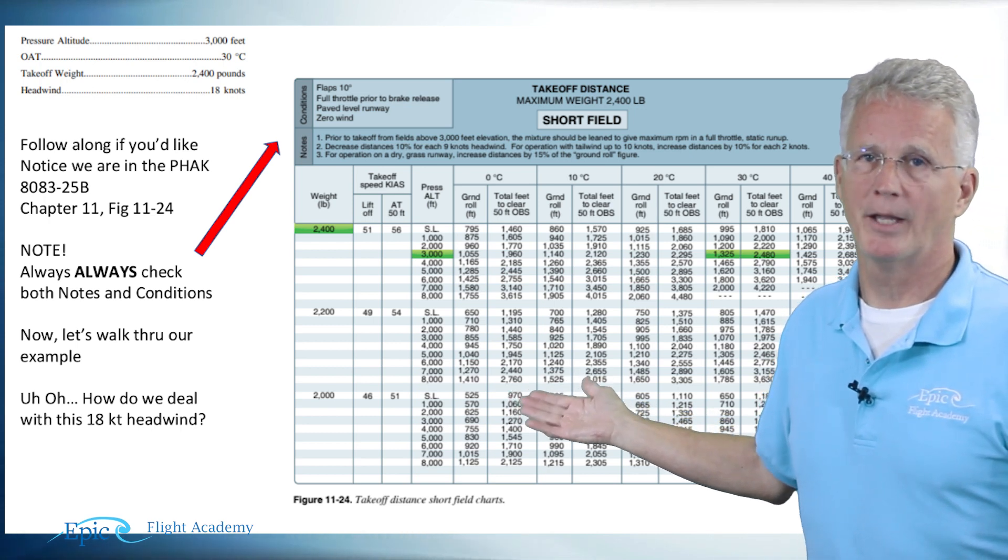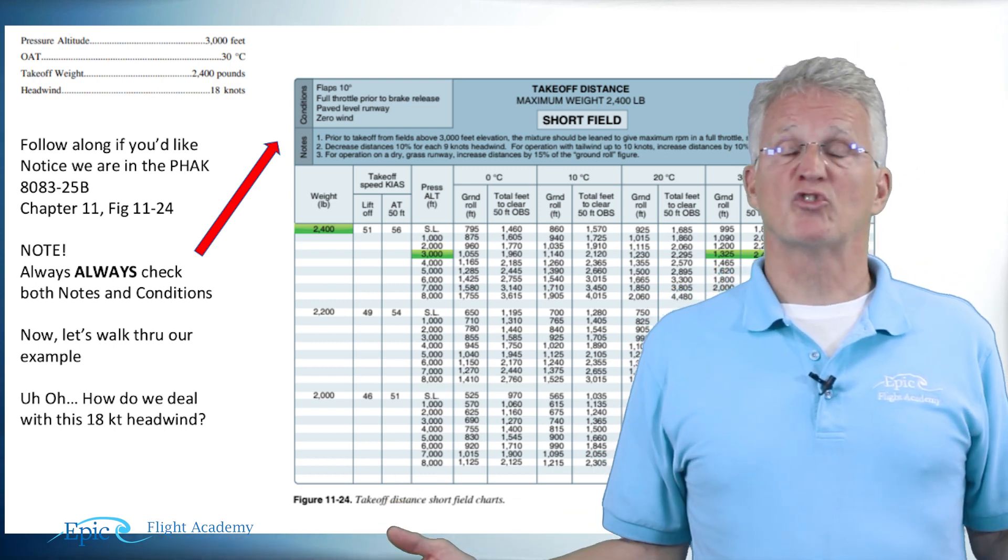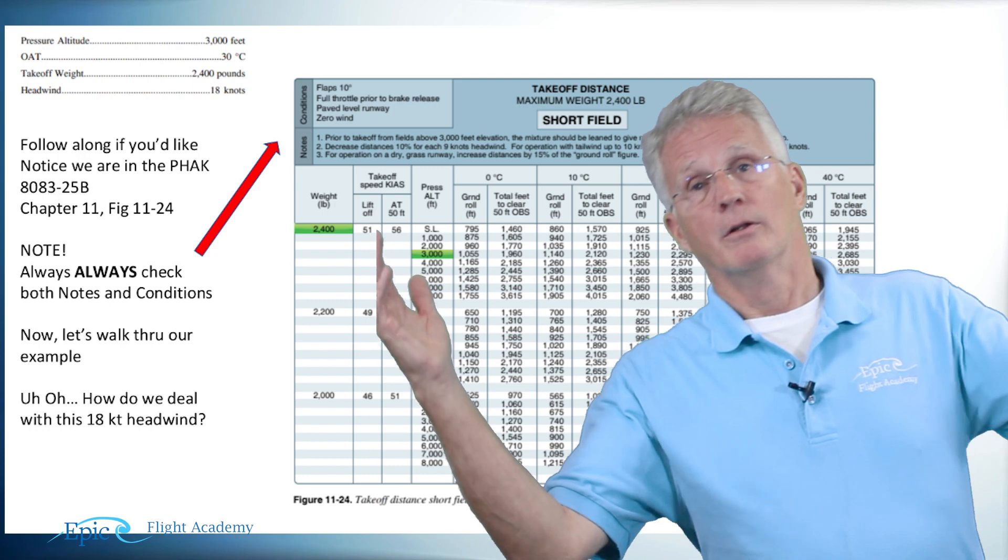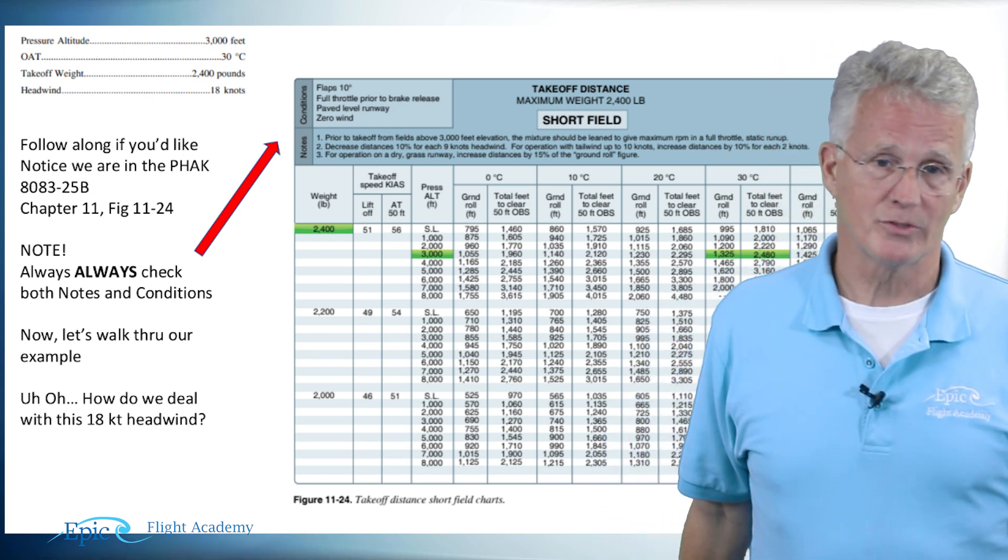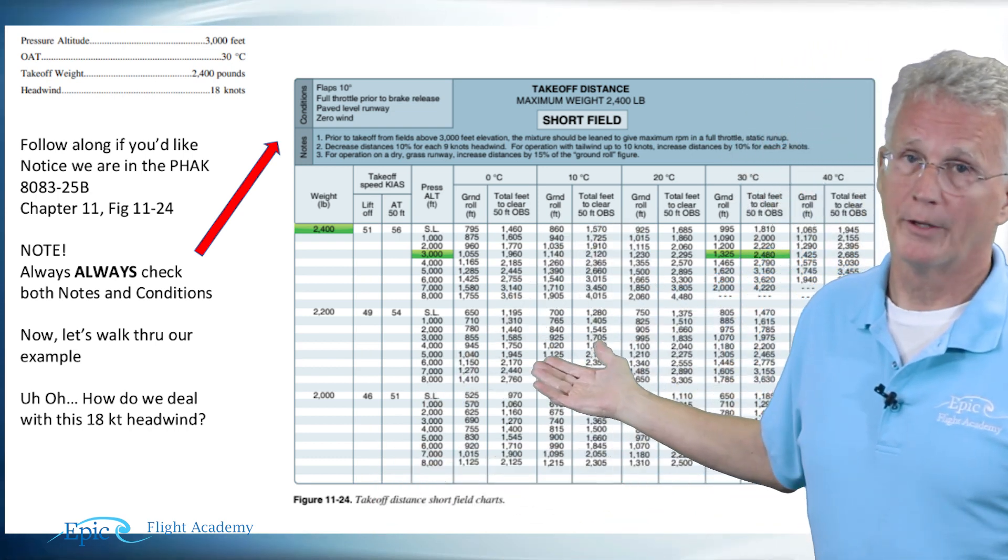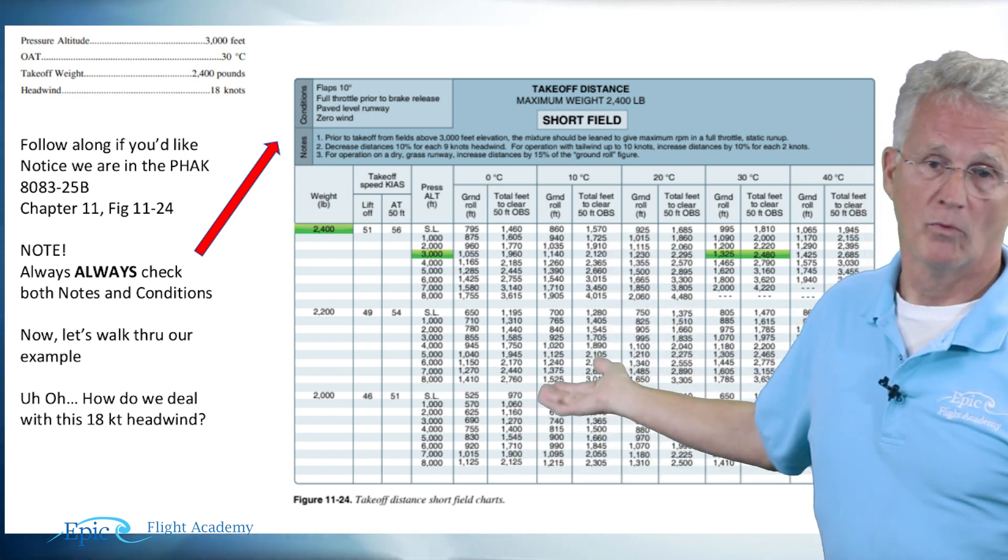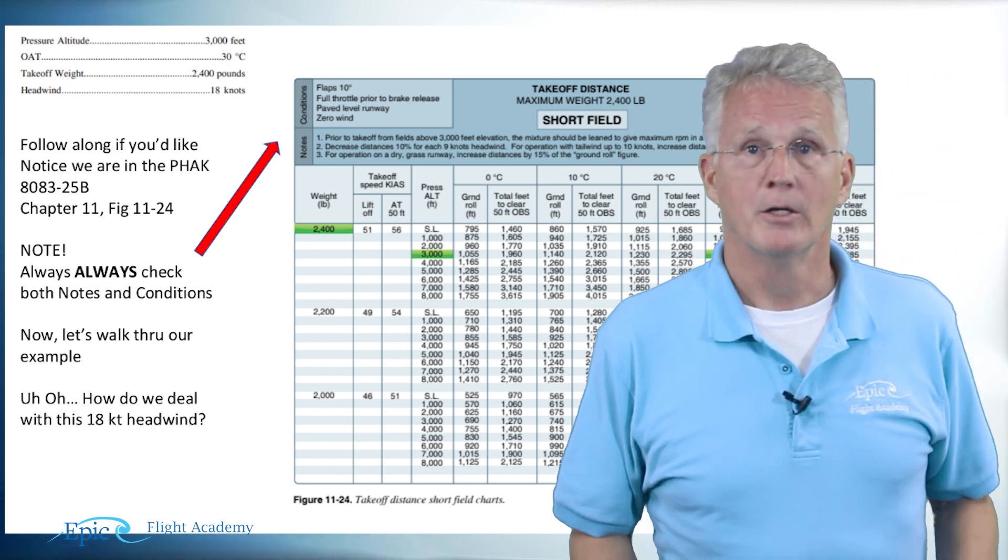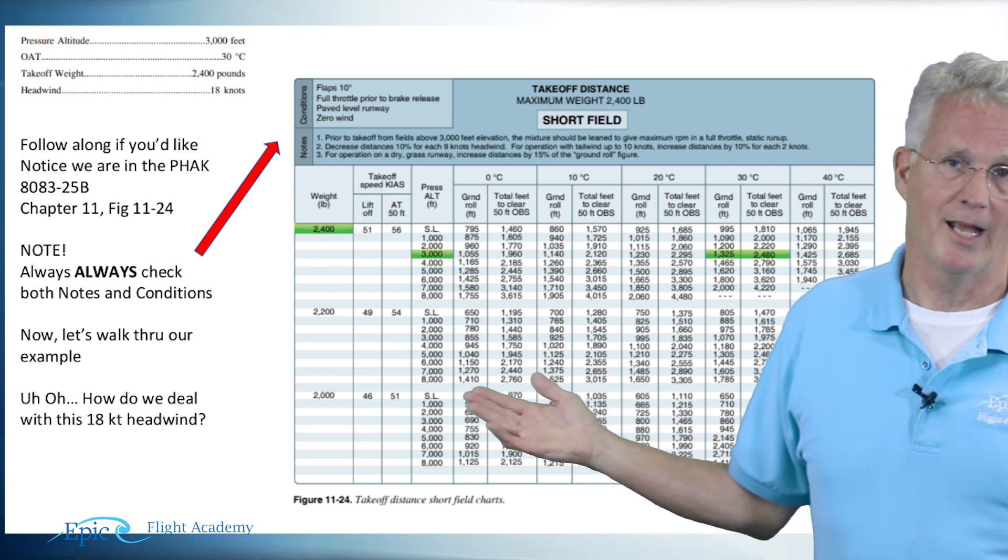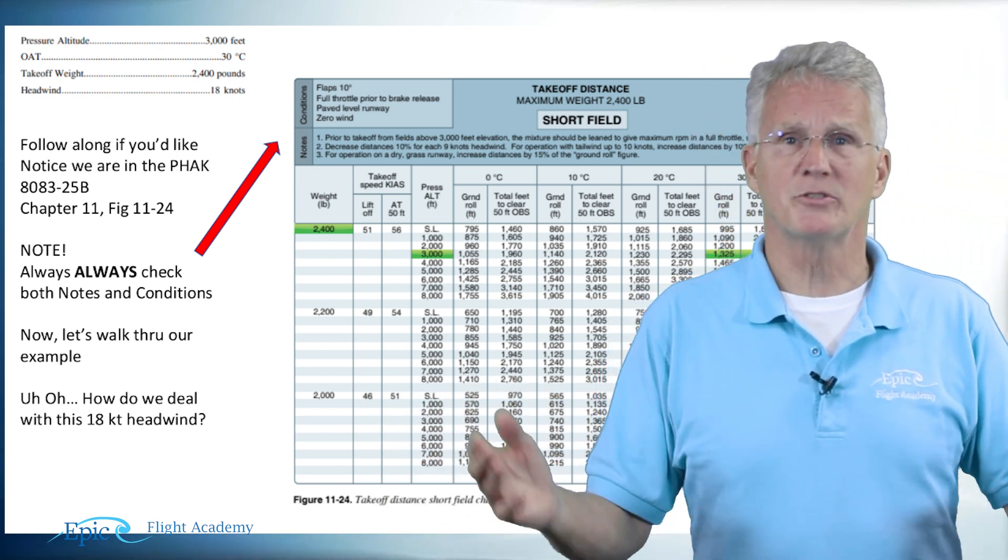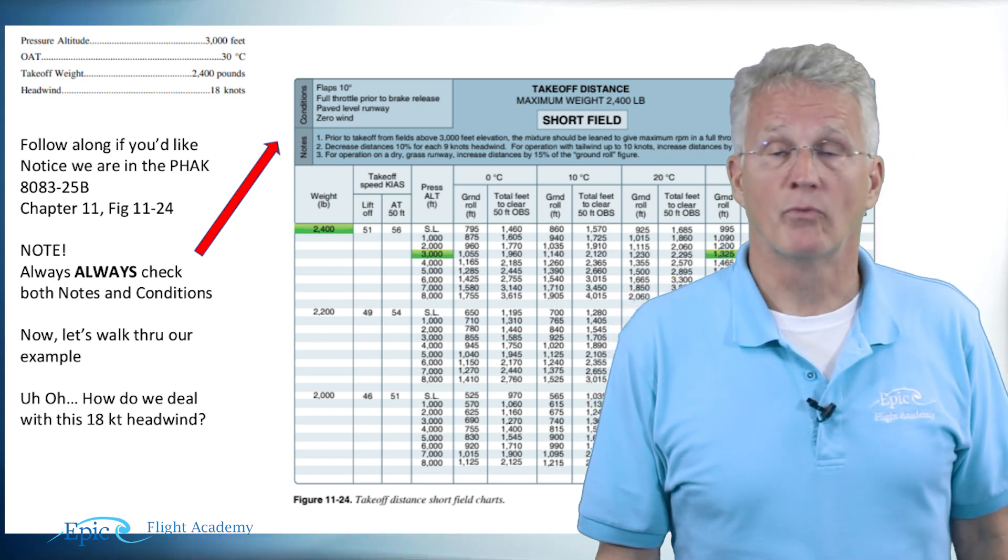What about my distance over a 50 foot obstacle? No change, it's just as simple. Same thing. I am going to take that distance we got from the chart, 2,400 times 20 percent. That's pretty simple. 480. So I take my 2,400, subtract 480, and my estimated distance over that 50 foot obstacle is about 1,920 feet.